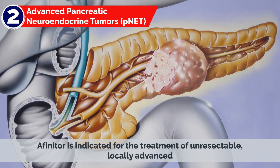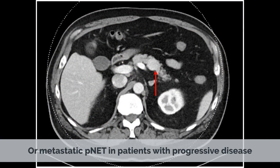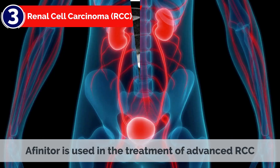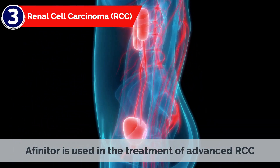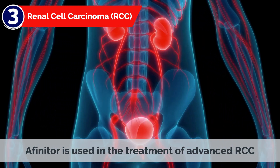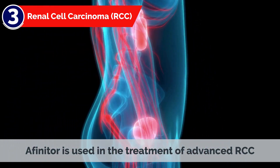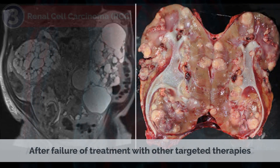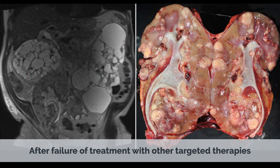2. Advanced Pancreatic Neuroendocrine Tumors (PNET): Affinitor is indicated for the treatment of unresectable, locally advanced, or metastatic PNET in patients with progressive disease. 3. Renal Cell Carcinoma (RCC): Affinitor is used in the treatment of advanced RCC after failure of treatment with other targeted therapies.